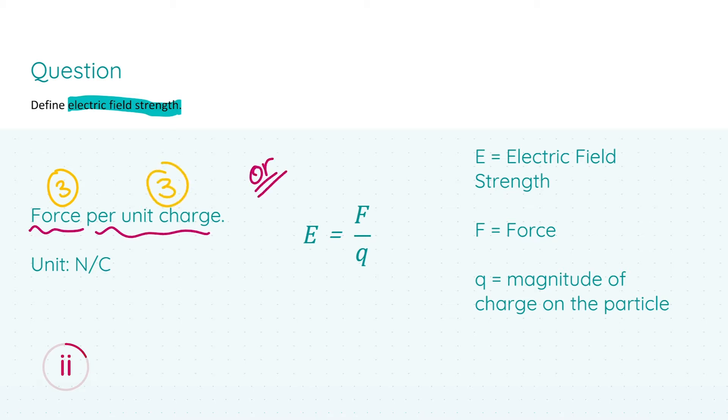Or you can answer this mathematically by popping down this formula here and notating it, just like we did before, that the electric field strength is equal to the force over the charge, and this charge is the magnitude of charge on the particle in question. Now for the formula you're going to get three marks and for notation you're going to get three marks. Now they don't explicitly ask for the unit, but since we were asked for the unit in the previous part of the question about potential difference, I always put it down here. And the unit of course for electric field strength is newton per coulomb.